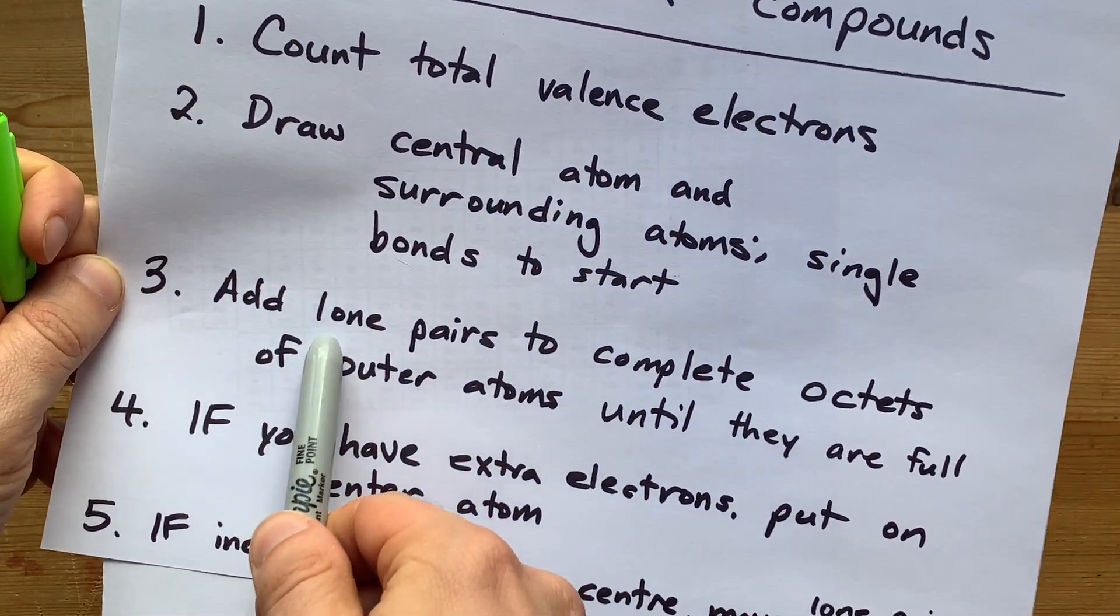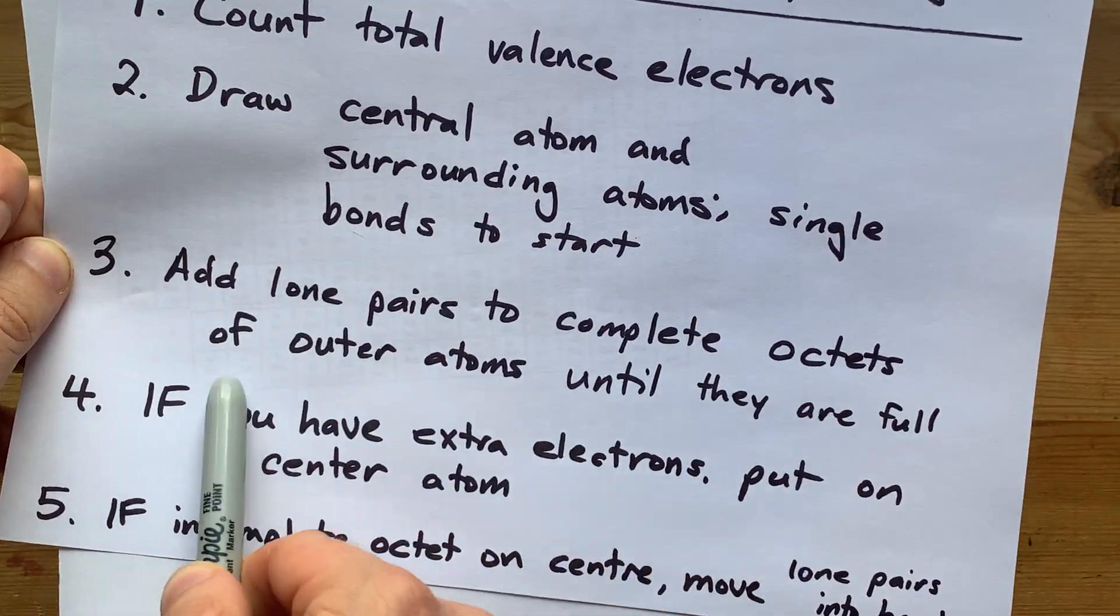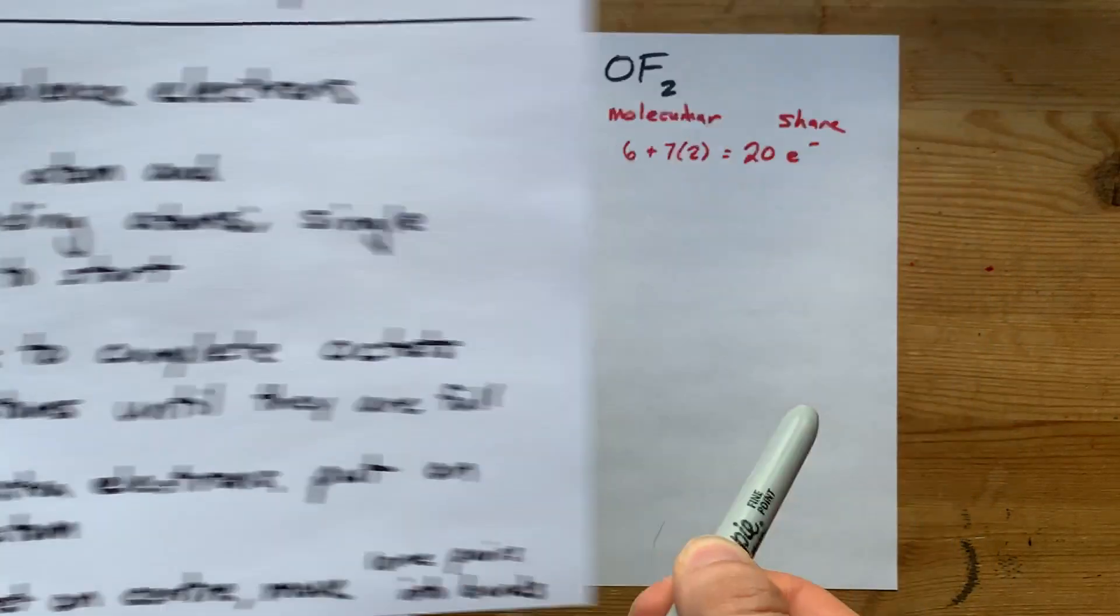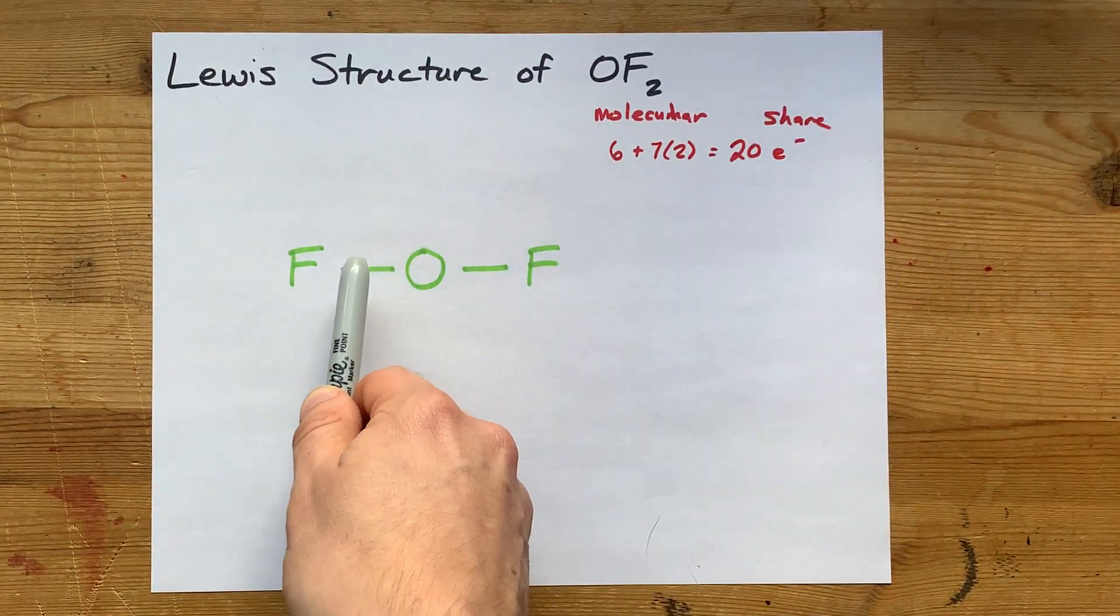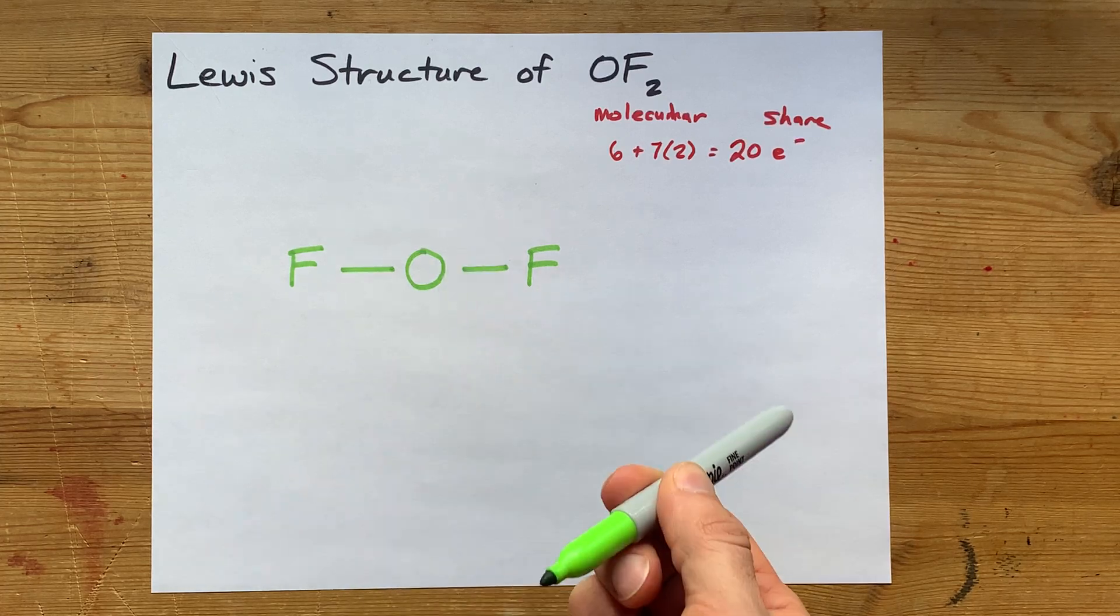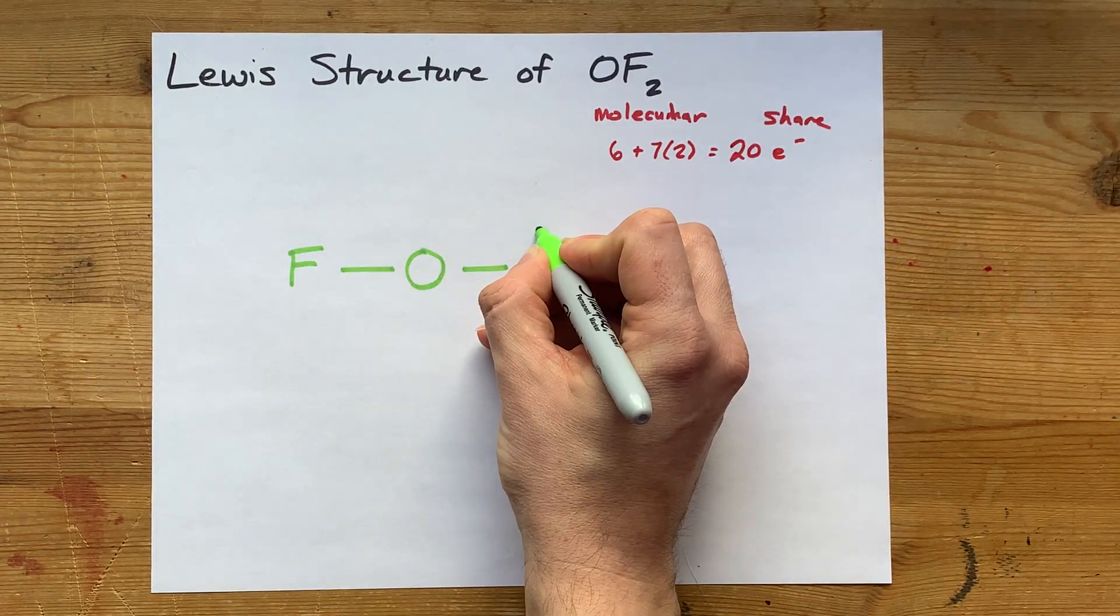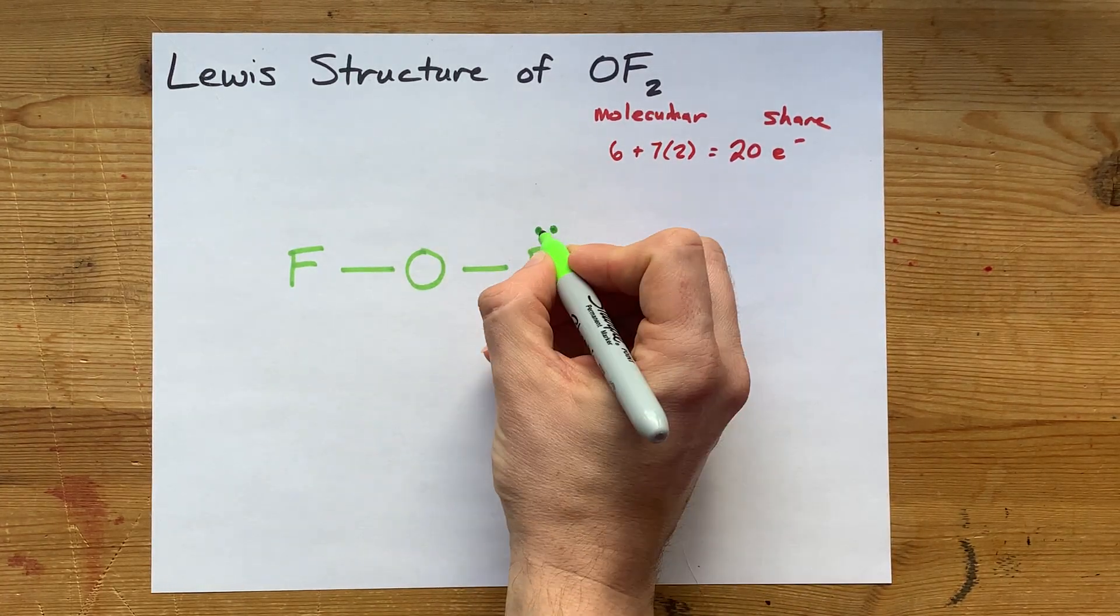I'm going to add lone pairs to complete the octets of the outer atoms until they're full. I need 20 electrons, and currently I only have four drawn.